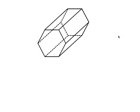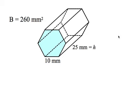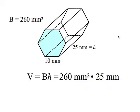Now let's look at a hexagonal prism. The area of a hexagon is a little tricky, so someone's already figured it out for us: it's 260 square millimeters. The height of this hexagonal prism is 25 millimeters. The volume, then, is the area of the base times the height: 260 times 25 equals 6,500 cubic millimeters.